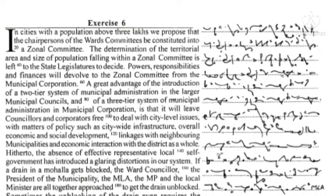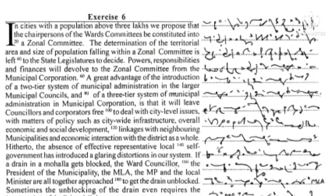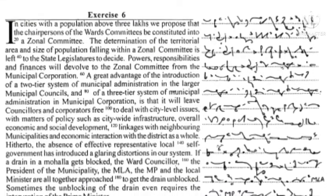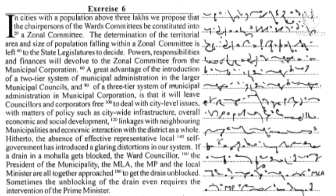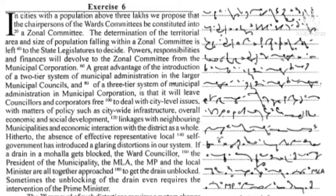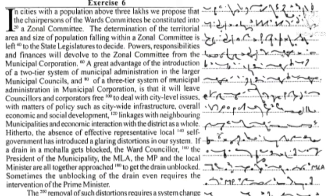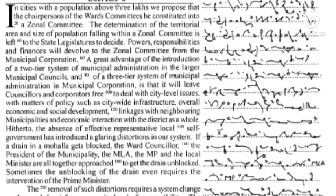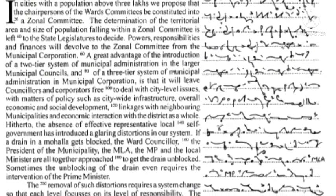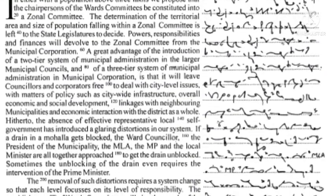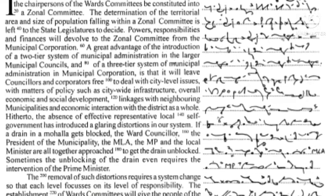Hitherto, the absence of effective representative local self-government has introduced glaring distortions in our system. If a drain in a mohalla gets blocked, the ward councillor, the president of the municipality, the MLA, the MP, and the local minister are all together approached to get the drain unblocked. Sometimes the unblocking of the drain even requires the intervention of the Prime Minister.